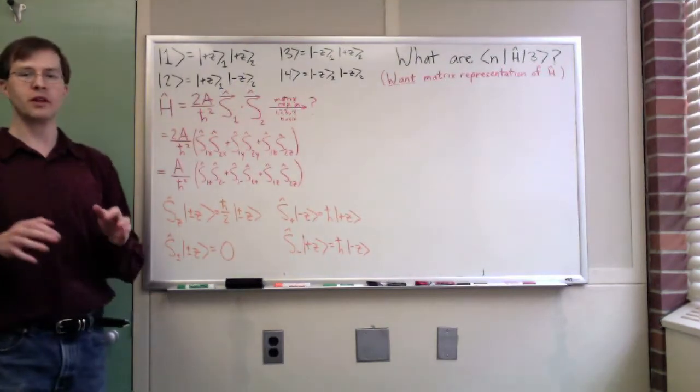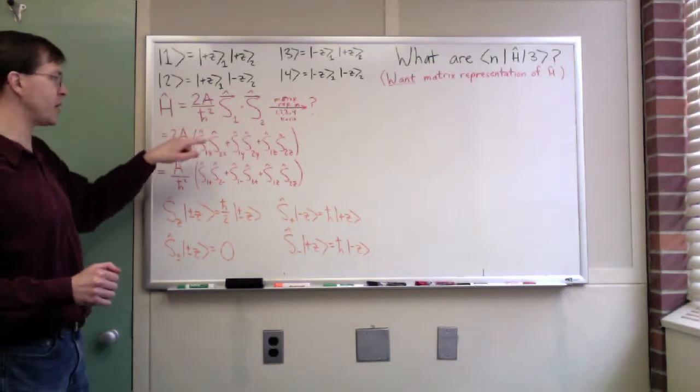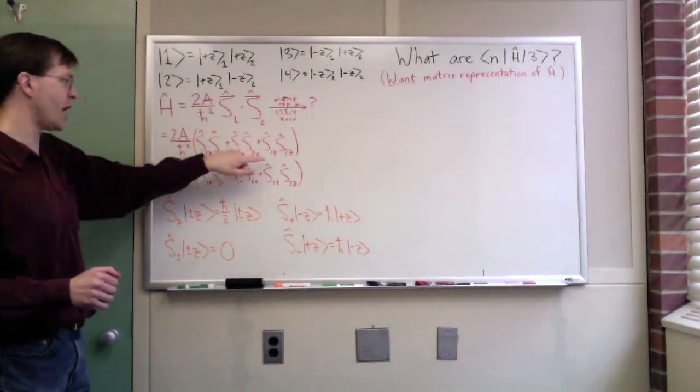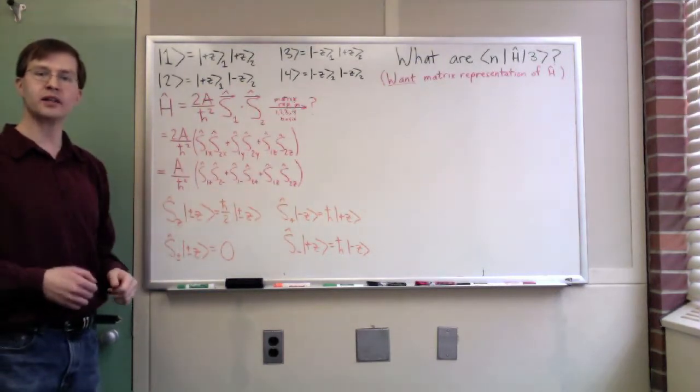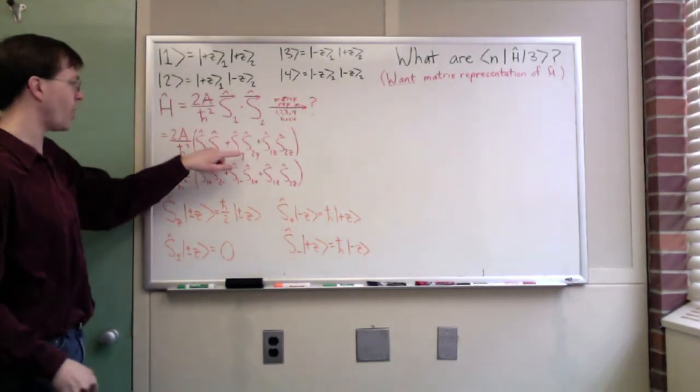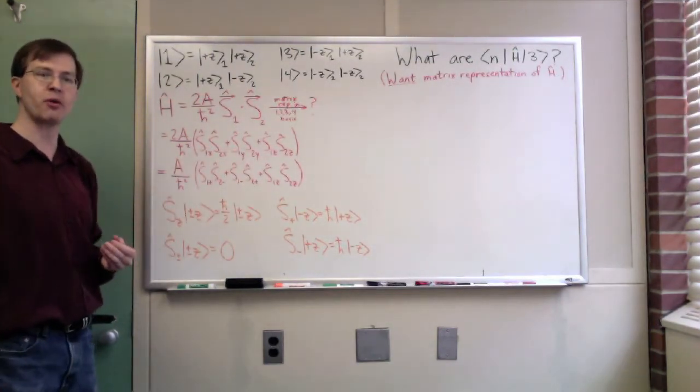Let me set up the pieces we're going to need to put that together. The first piece is what is a dot product anyway? Well, x component times x component plus y times y plus z times z, just a product of the spin operators. Notice I've written them as spin 1 and spin 2, keeping separate operators for the two separate particles.